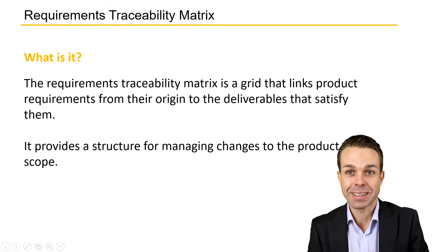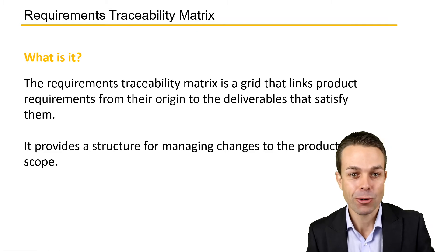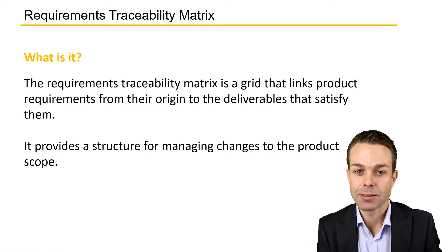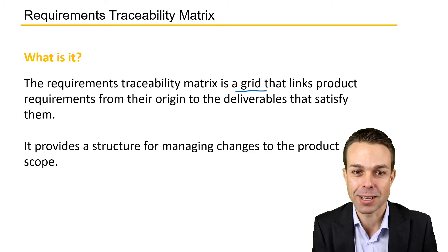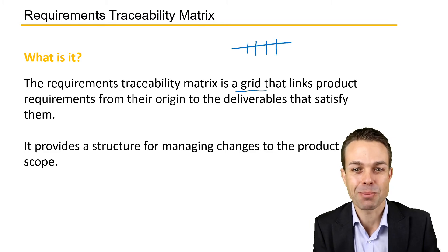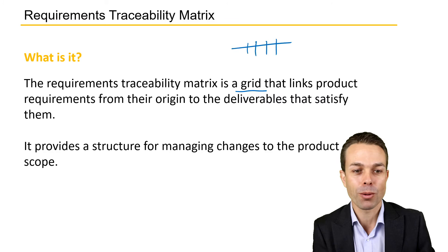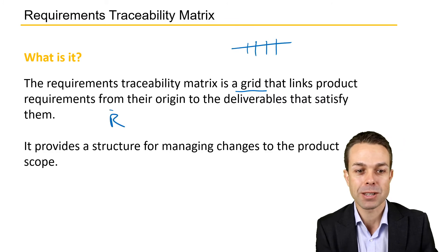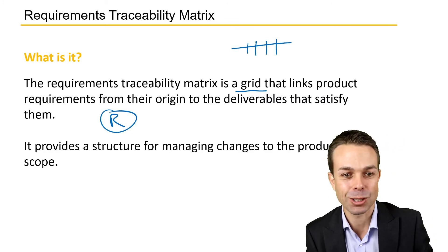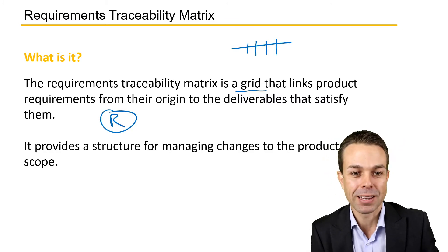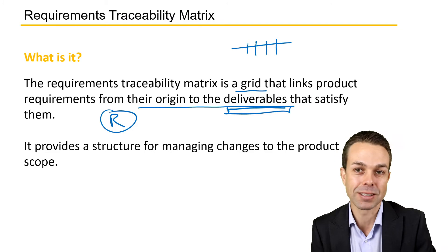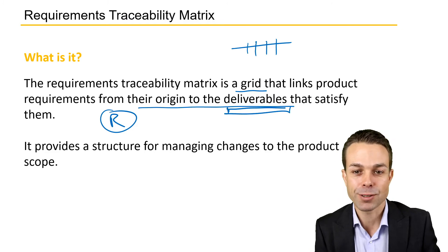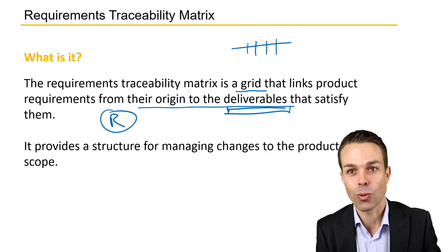What is the Requirements Traceability Matrix? Well, it's a grid or a matrix which links the product requirements from their origin — the requirements gathered from our stakeholders and customer — to the deliverables we are ultimately delivering as part of our project, ensuring that those deliverables satisfy the requirements we've gathered.